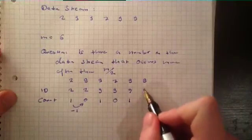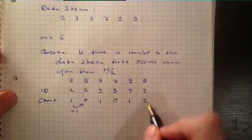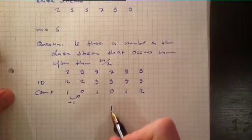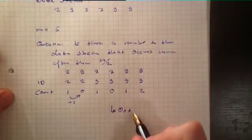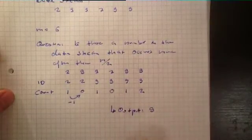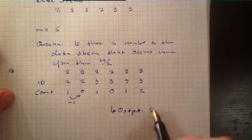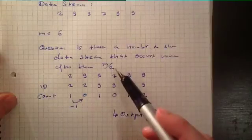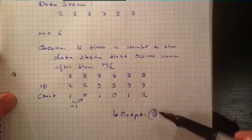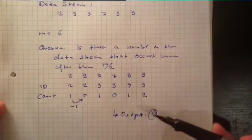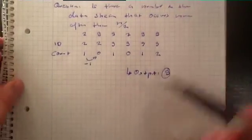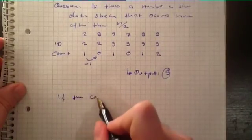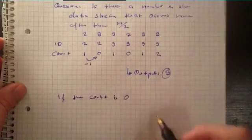Then the last number is again a 9. The ID is already 9, stays 9, and the count gets 2. So that's the end, and the output is 9. Yes, there is a number that appears more often than M divided by 2, and it's the number 9.